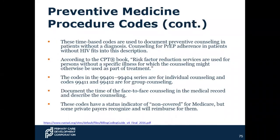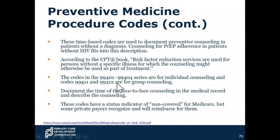Some more details on preventive medicine procedure coding: they're time-based codes used to document preventive counseling. Counseling for PrEP adherence in patients without HIV fits this description. According to the CPT book, risk factor reduction services are used for persons without a specific illness. The code series 99401 through 99404 is for individual counseling. There are also separate codes for group counseling — please make sure you're using the correct codes. Check with your insurance carriers that they are actually paying for group counseling, as reimbursement is becoming more common but not universal.